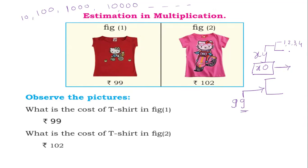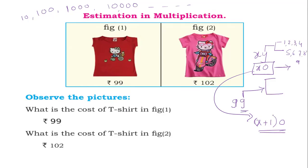In the second case, if the unit digit contains 5, 6, 7, 8, or 9 — add 1 to the tens digit and put 0 in the unit digit. This is estimation to the nearest 10 in the second case.